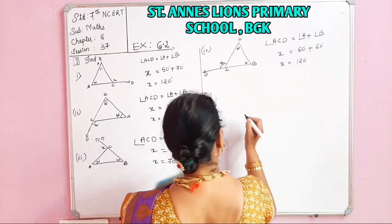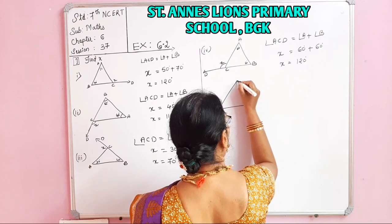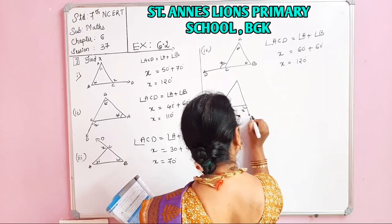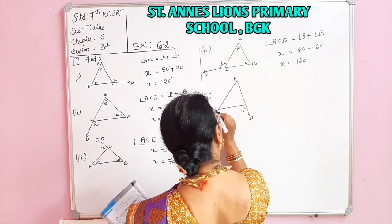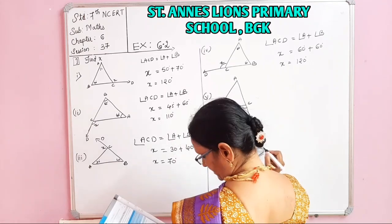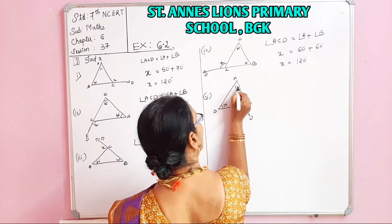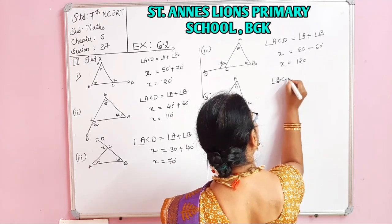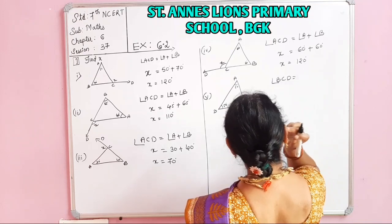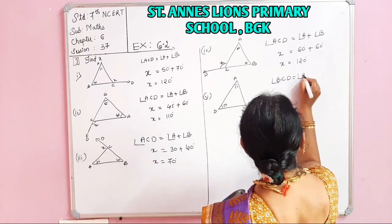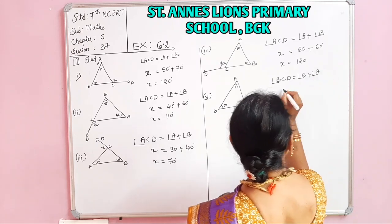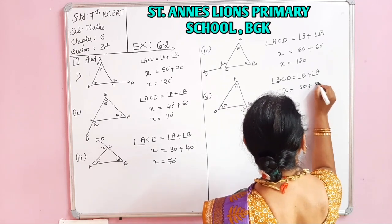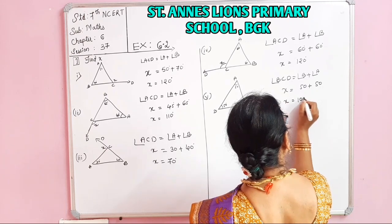The fifth one. This is X, triangle ABC. The angles are 50 and 50 — wait, Angle V is 15 and Angle A is 15. The exterior angle is Angle BCD. Angle BCD is equal to Angle V plus Angle A. BCD is X, so X is equal to 100 degrees.